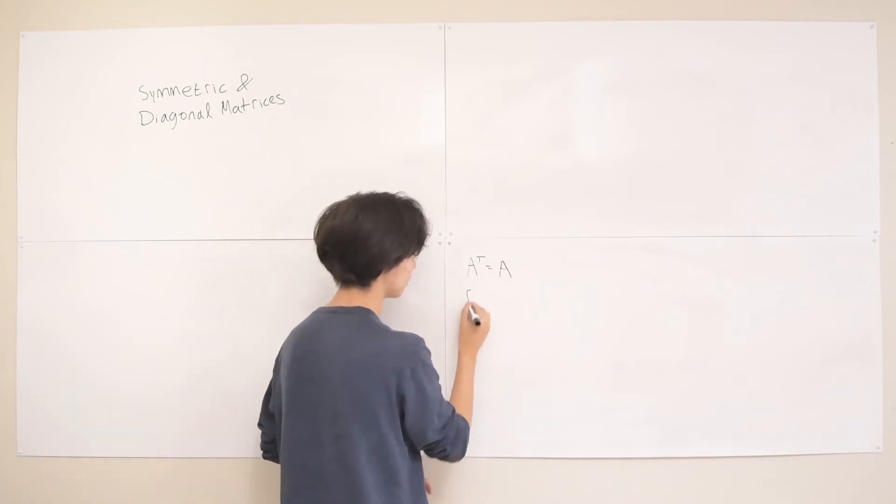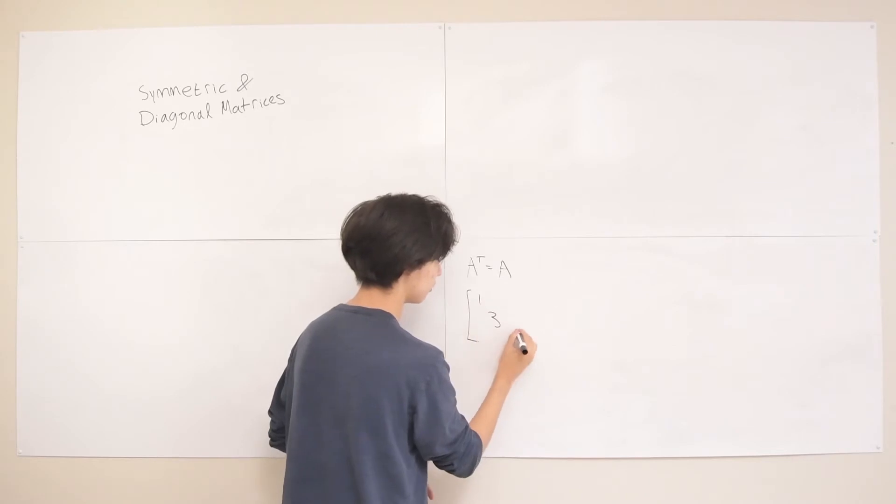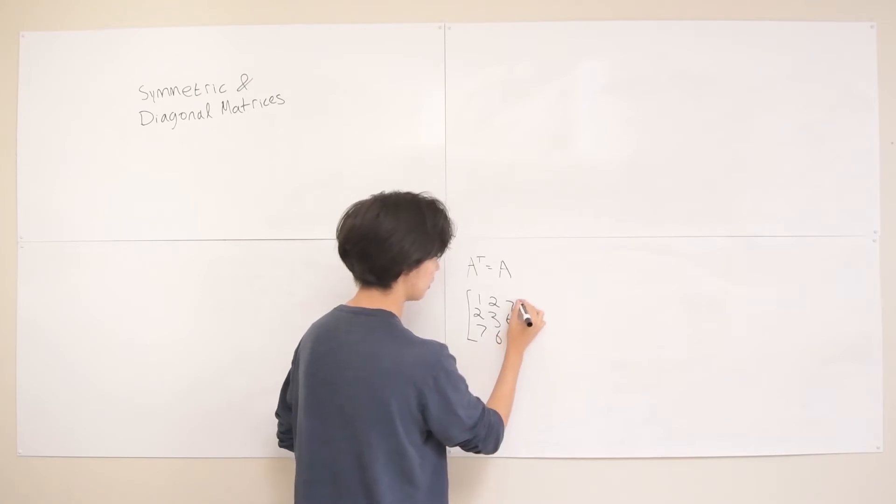I'll just look at an example. Say, 1, 3, 5, 2, 2, 7, 7, 6, 6. There we go, there's a nice symmetric matrix.